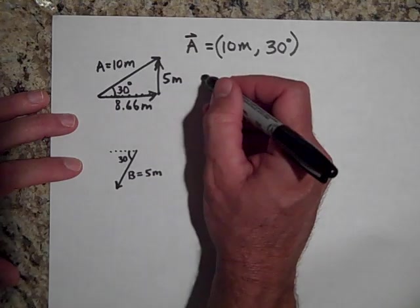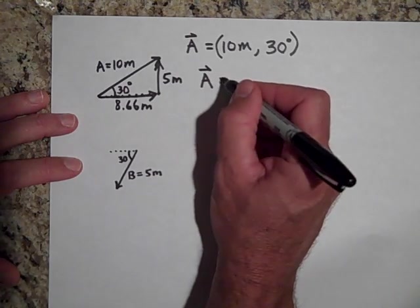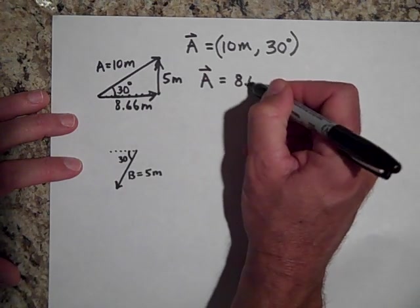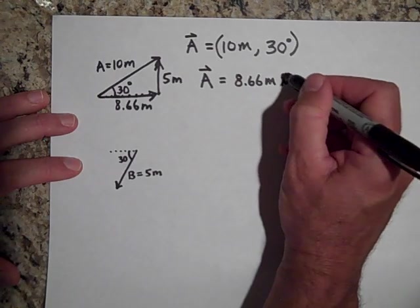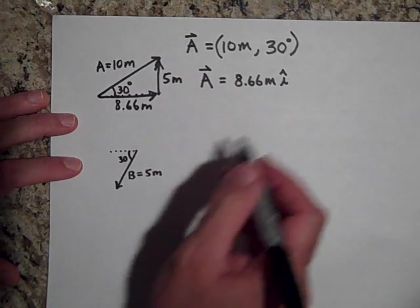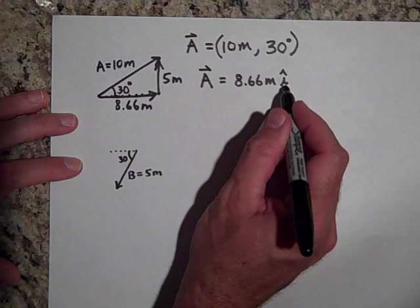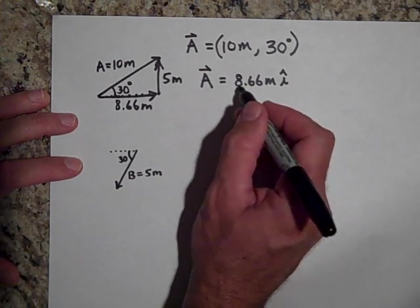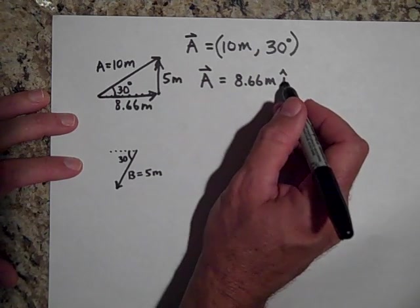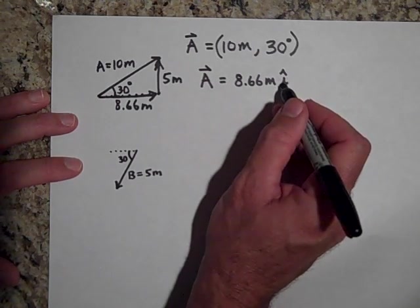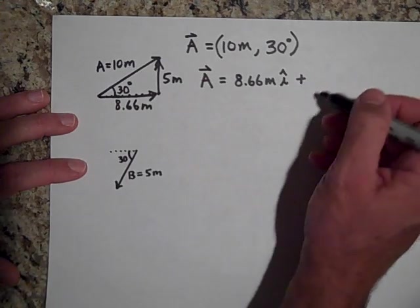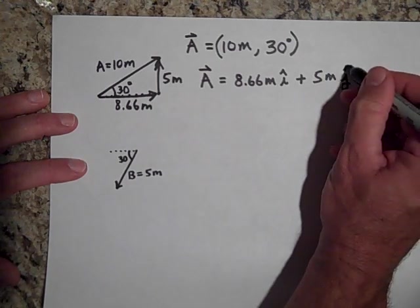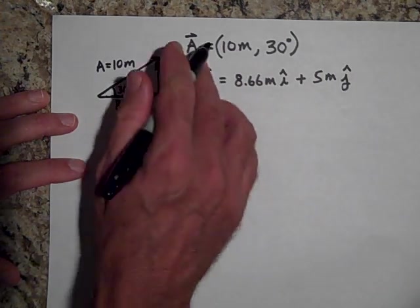So I can write vector A in terms of unit vectors as positive 8.6 meters in the i-direction. The i-direction means i is a unit vector pointing in the positive x direction — I'm multiplying a scalar times a vector, keeping the direction in the positive x direction. Then the y component is 5 meters in the j-direction. So there are two ways to write vectors.